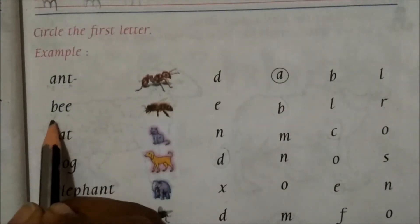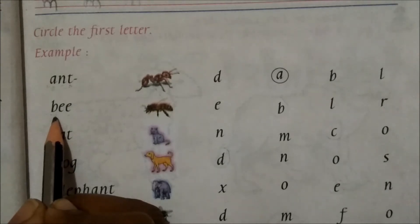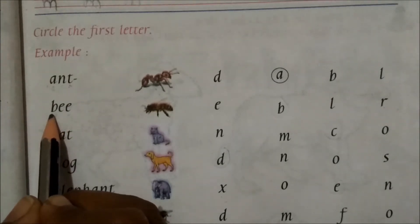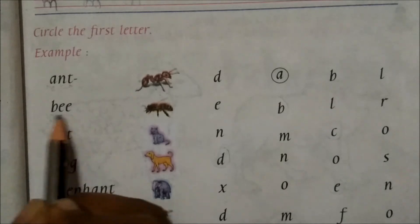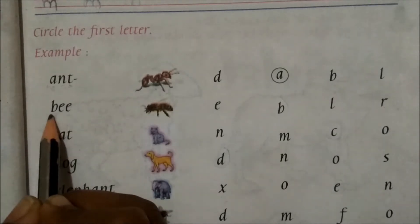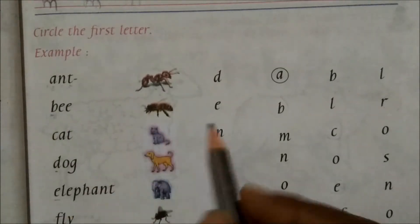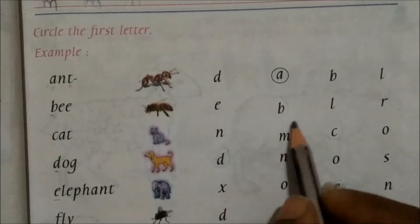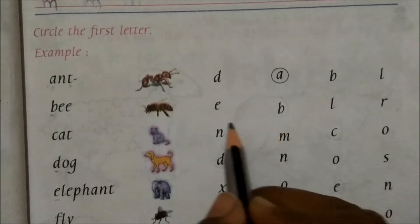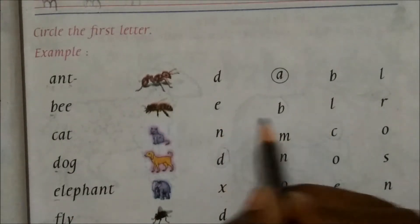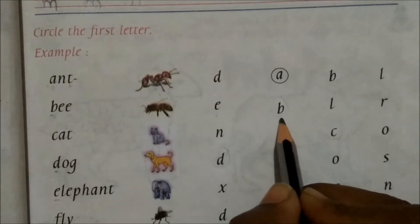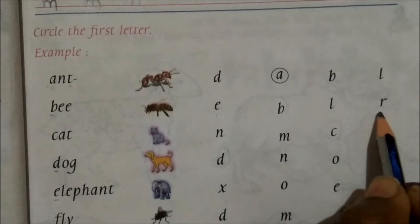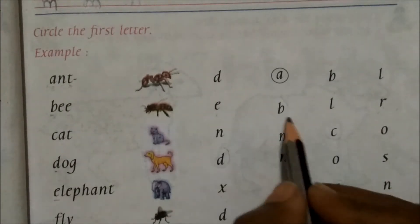Which is the first letter in this word? This is B — B-E-E. The first letter is B. We find out the B in this row: E-B-L-R. The first letter is here.